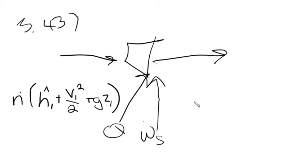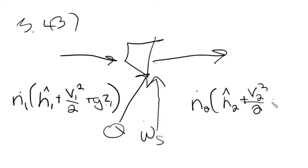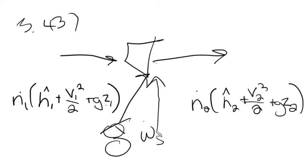The outlet stream has the same quantity but with outlet conditions: N-dot-2 times H-hat-2, plus V2²/2, plus gz2. For this problem, the turbine is adiabatic so Q = 0. The problem gives no velocities in or out, so we assume inlet and outlet velocities are equal — those kinetic energy terms cancel to zero. There's no change in elevation either, so the potential energy terms are also zero.